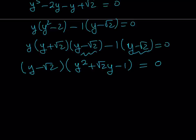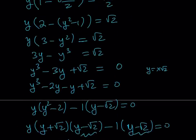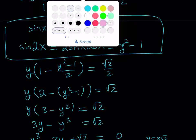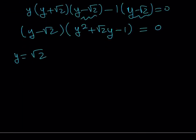We have a linear factor and a quadratic factor. From the linear factor, y equals root 2. Since our goal is to find sine of 2x, and sine 2x equals y squared minus 1, we substitute y equals root 2: y squared is 2, and 2 minus 1 is 1. So from this factor, sine of 2x equals 1.